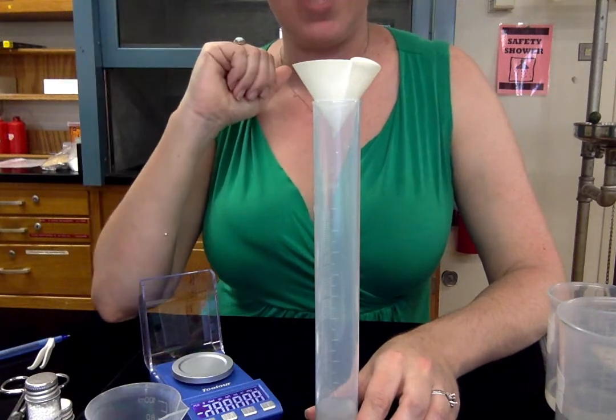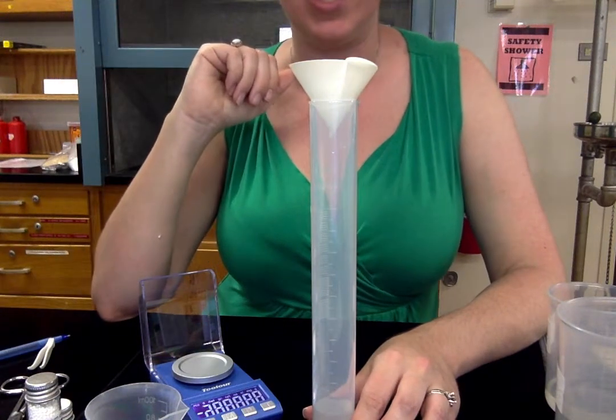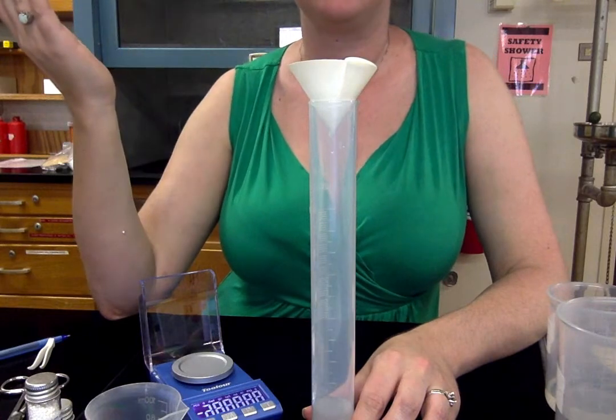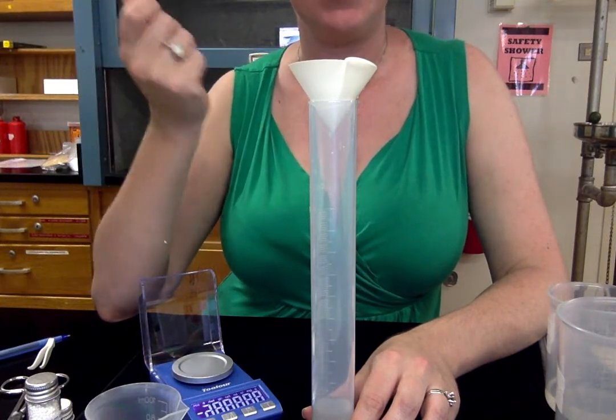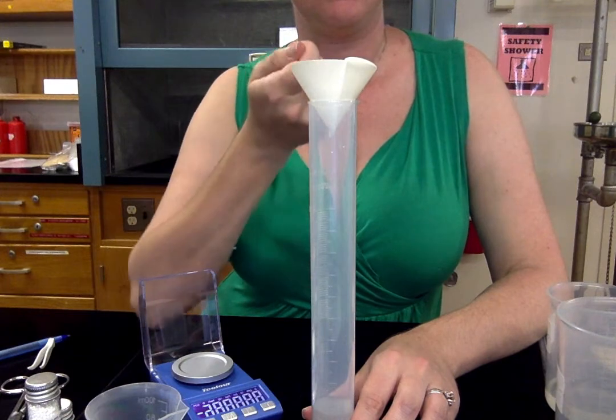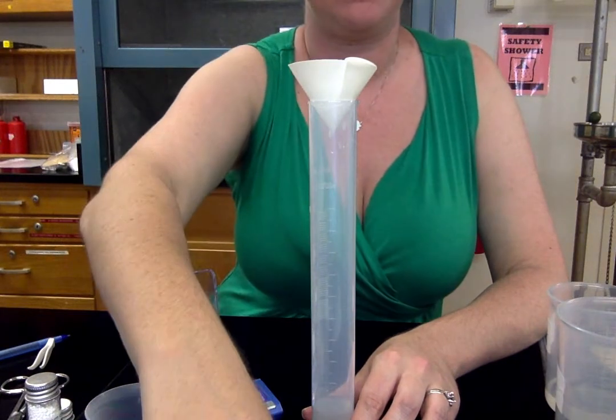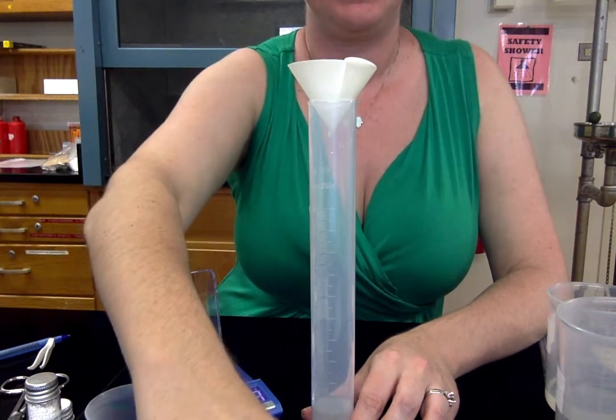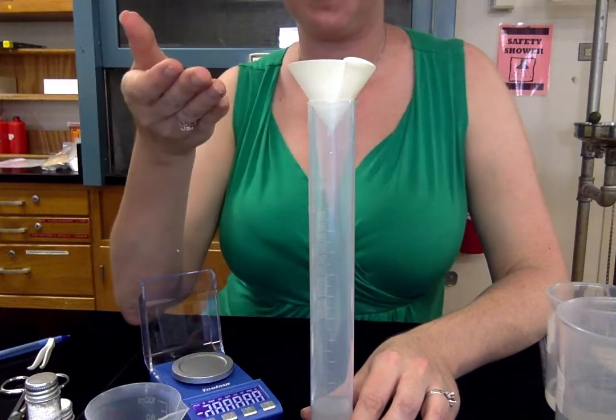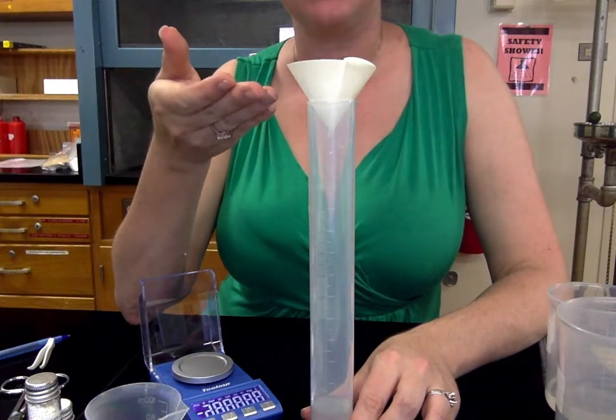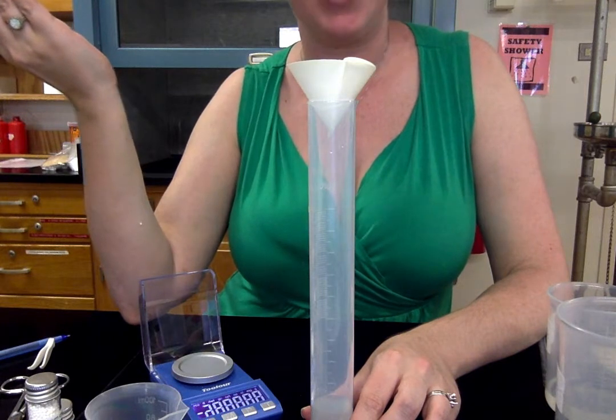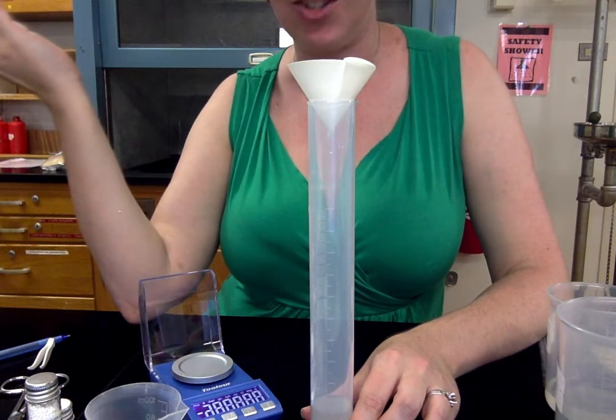And this precipitate, by the way, that you're creating is chalk. When you write with chalk on a chalkboard, that is made out of this material. It's calcium carbonate. So it is kind of an everyday material that you're making, this calcium carbonate. All it is is chalk.